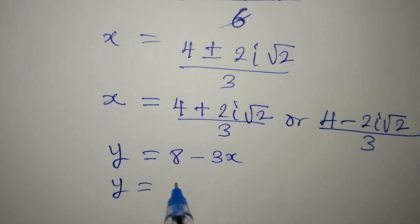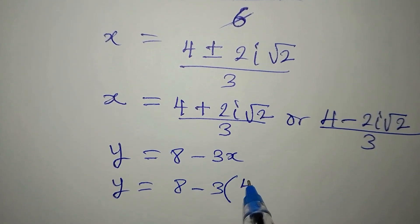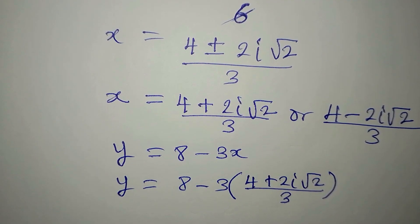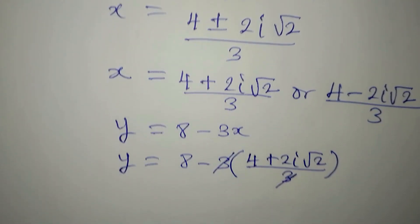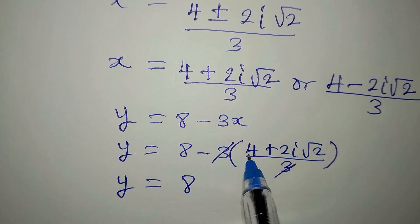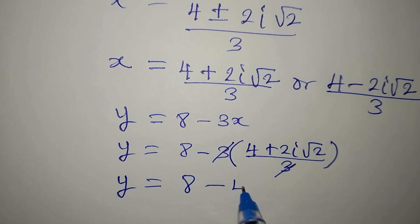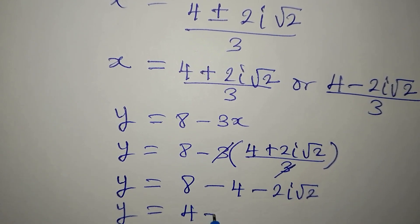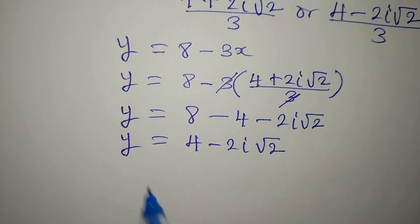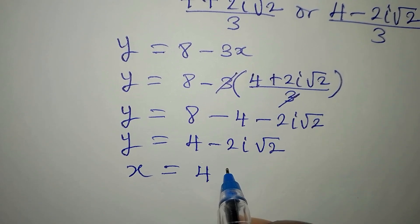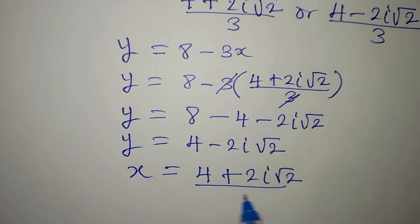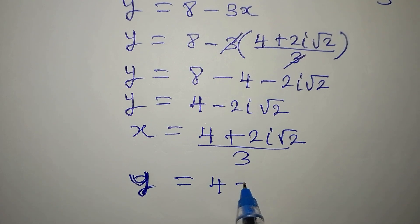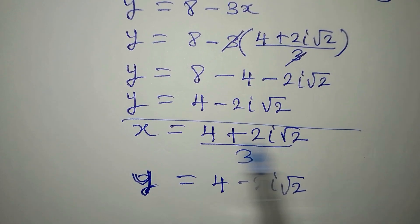For the first value of x: y equals 8 minus 3 times (4 plus 2i root 2) over 3. The 3 cancels, so opening the bracket with the negative gives y equals 8 minus 4 minus 2i root 2, which means y equals 4 minus 2i root 2. So when x equals (4 plus 2i root 2) over 3, y equals 4 minus 2i root 2.